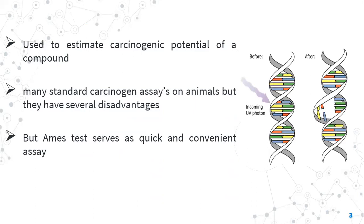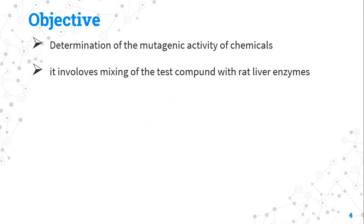The Ames test is basically used to estimate the carcinogenicity potential of a compound. Many standard carcinogenic assays on mice and rats are available, but they are time-consuming — it takes around two to three years for a single chemical to be tested — and also very expensive, and can give false positive or false negative responses. The Ames test serves as a quick and convenient assay, taking hardly two to three days, and does not use a live model, so it is also inexpensive.